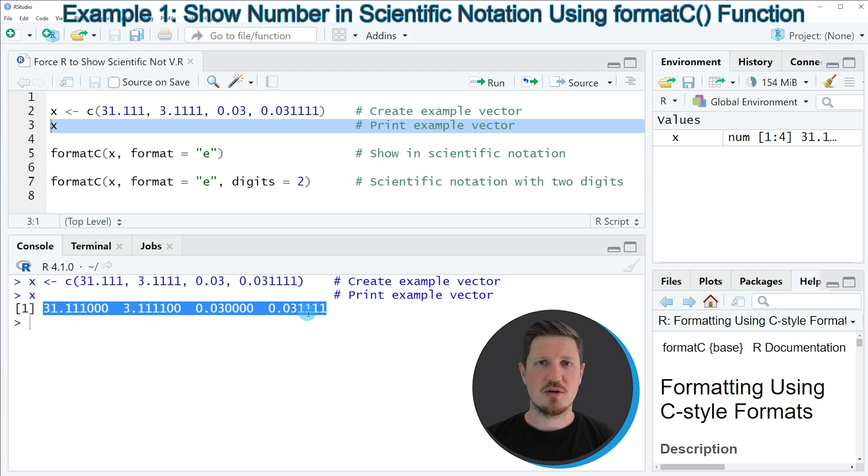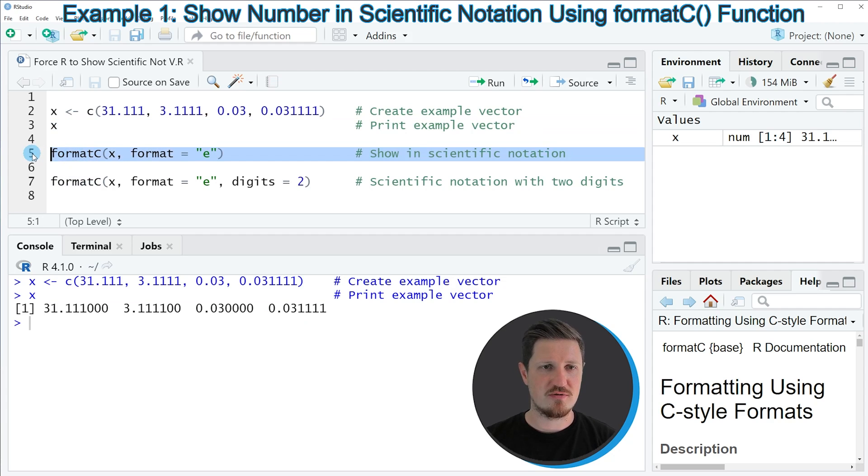So if we want to print our numbers with scientific notation, we can use the formatC function, as you can see in line 5 of the code. And within the formatC function, we have to specify the name of our data object. And then we have to specify the format argument to be equal to the letter E. So if you run line 5 of the code, you can see at the bottom that our vector is returned once again.